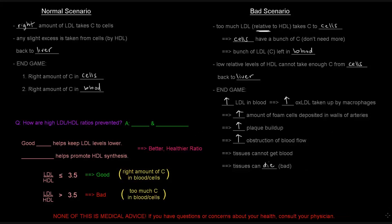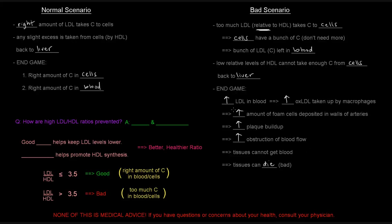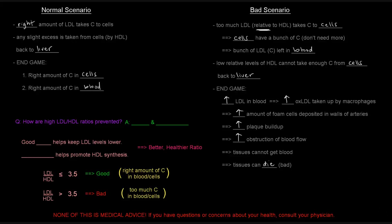So really, it's not about having LDL is bad or having HDL is good. It's about a ratio and a proper balance between the two. High LDL to HDL ratios are typically prevented by proper diet and exercise. A good diet helps to keep LDL levels lower, whereas exercise helps promote HDL synthesis. So a proper diet and exercise combined together will give you a better, healthier ratio.